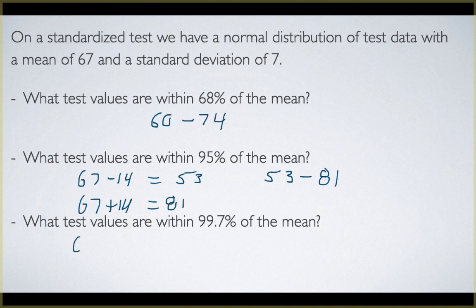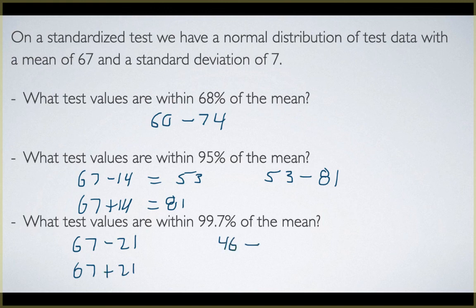For 99.7%, that's three standard deviations. So we do 67 minus 21 and 67 plus 21, giving us 46 and 88. So 99.7% of the test scores fell between 46 and 88. These percentages — 68, 95, and 99.7 — correspond to your first, second, and third standard deviations.